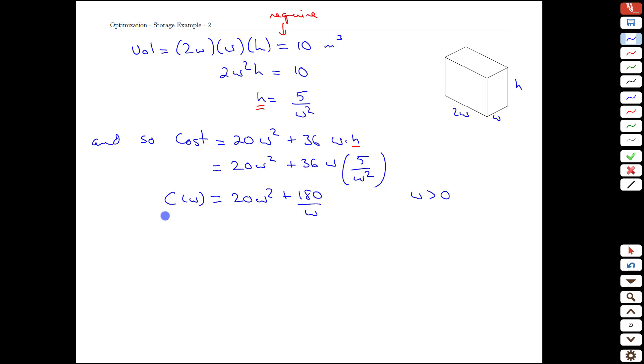Our only domain constraint really is that the width has to be positive. Well, with that in mind, let's take a look at the function and look for critical points. Those are going to be the points where the derivative of this function equals 0. So dC/dw is what we're going to need or C prime if you prefer.